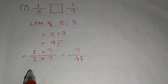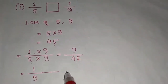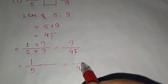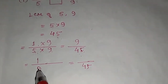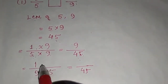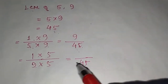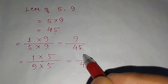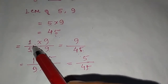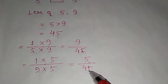For the second fraction 1/9: to make the denominator 45, we multiply 9 by 5 (since 9 × 5 = 45). The same number must be multiplied in the numerator: 1 × 5 = 5, giving us 5/45. So 1/5 becomes 9/45 and 1/9 becomes 5/45.